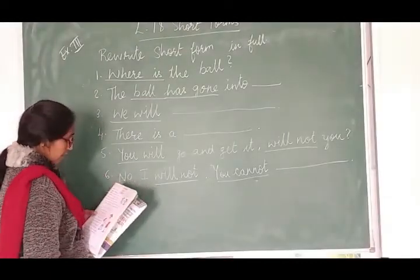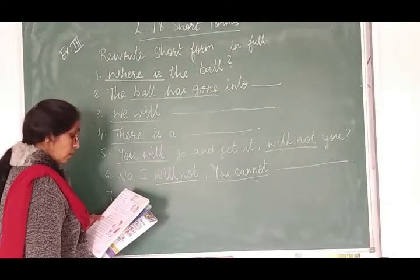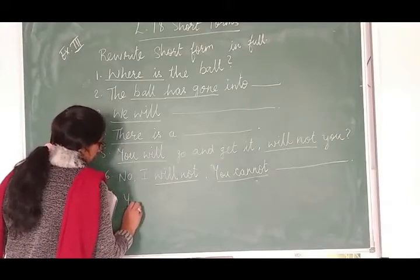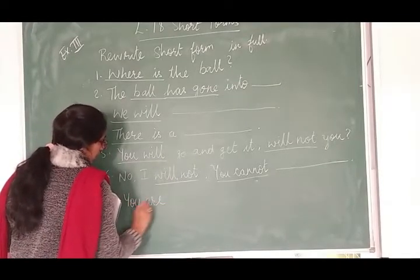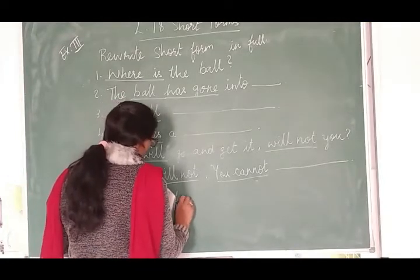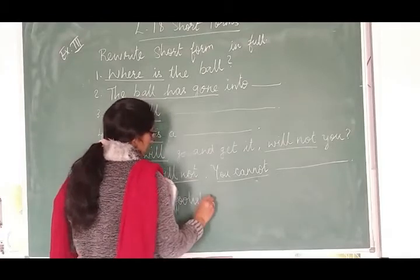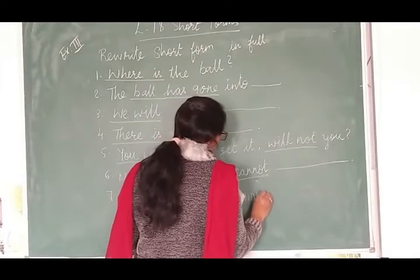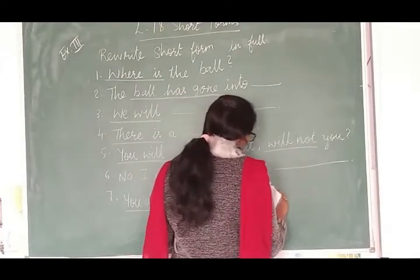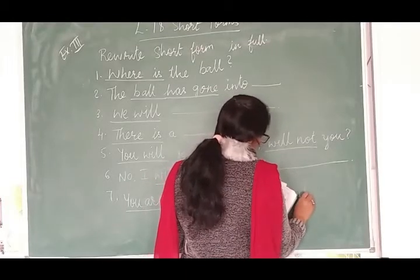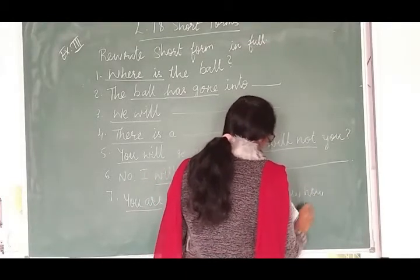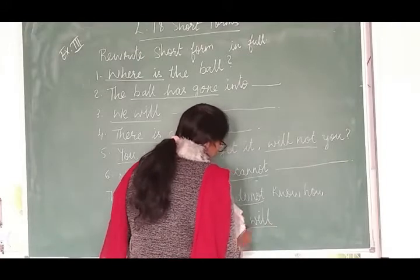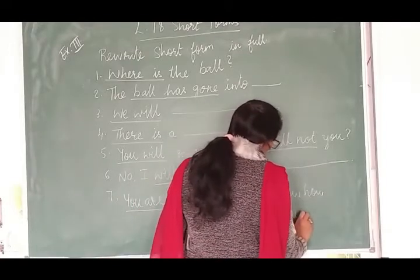Then, seventh one. You, apostrophe, are foolish. You don't know how we, we, apostrophe double L do it. Toh, you, apostrophe are ka kya hota hai? You are, you are foolish, okay? You don't, don't ka kya hota hai? Do not, you do not know. Underline karo. How we will, we apostrophe double L hai hai, na, toh we, uska kya hota hai? We will do it, okay?